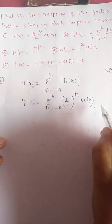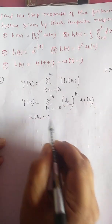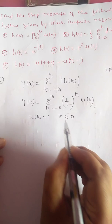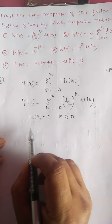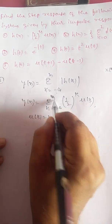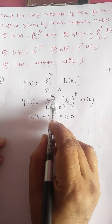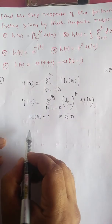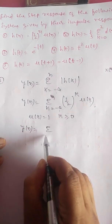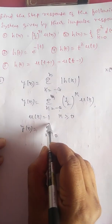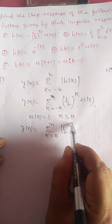We know that from the definition, u[k] = 1 when k ≥ 0, otherwise its value is 0. That means the lower limit becomes 0 and the upper limit is n. So we can write y[n] = summation of k from 0 to n of (1/2)^k.